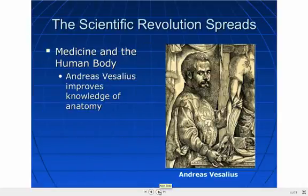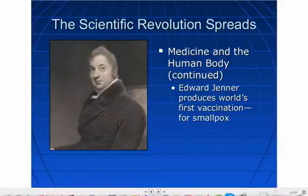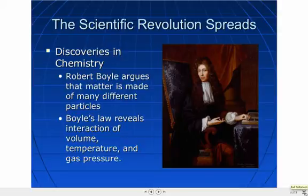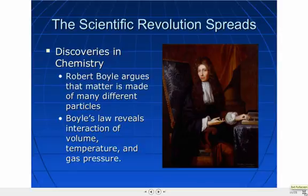We have developments in medicine and the human body. Vesalius is observing how the body works — that's anatomy. We also have people like Edward Jenner, who starts to produce medicine to help people stop getting sick from smallpox. We also have discoveries in chemistry: Robert Boyle argues that matter is made of different particles — the idea of atoms — and examines the interaction of volume, temperature, and gas pressure, including water changing different forms. These are all important things that develop during the Scientific Revolution.